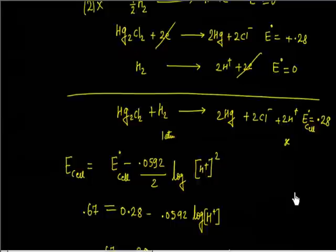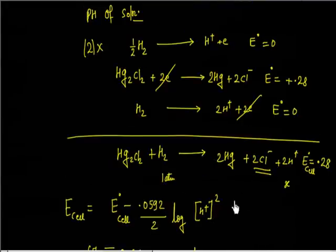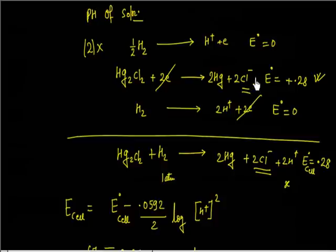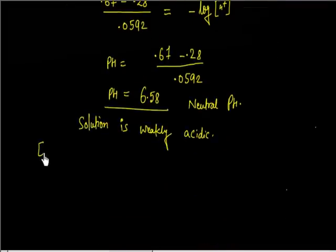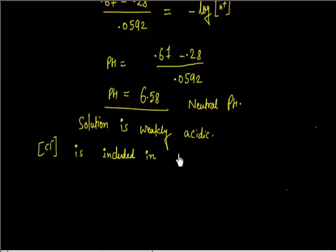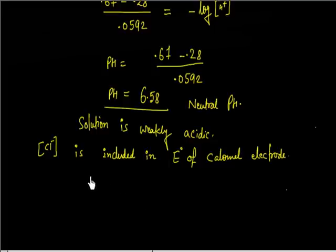An important point in this problem is about Cl⁻. We do not include Cl⁻ in the equilibrium expression because the value of E° for the calomel electrode is already given as a standard value. If it is standard, then Cl⁻ is 1 M. If it is not standard but saturated, then Cl⁻ is included in E° of the calomel electrode. So the concentration of Cl⁻ is included in E° of the calomel electrode — there is no need to correct for it, and Cl⁻ concentration remains constant. This is an important point.